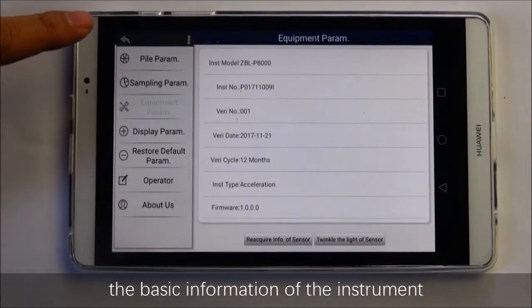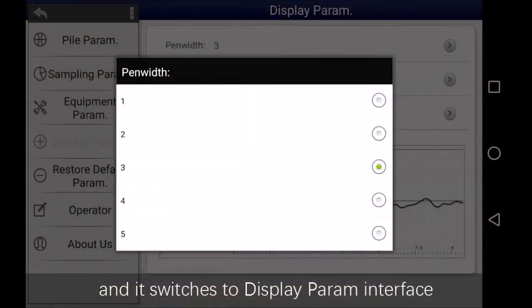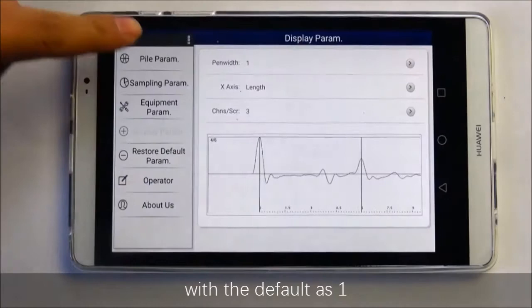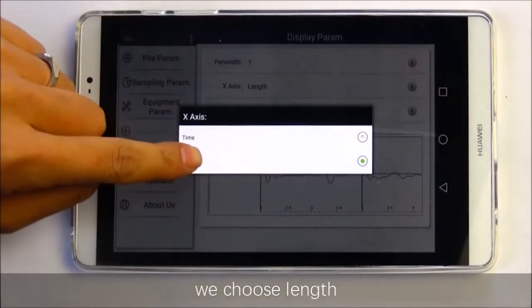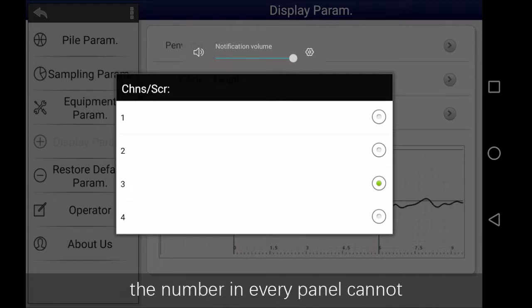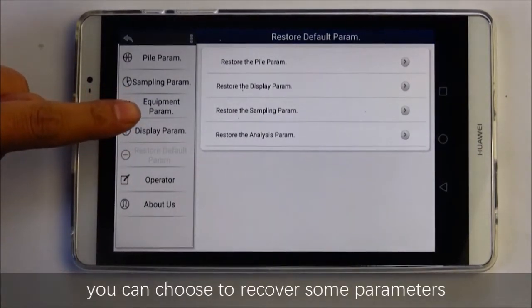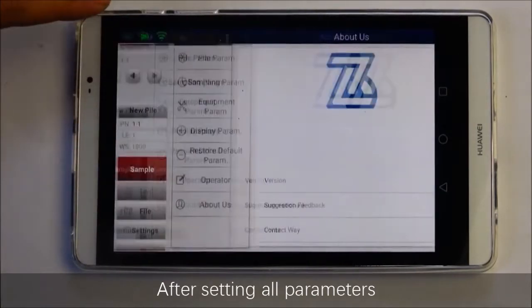Equipment parameter shows the basic information of the instrument. Click display parameter to switch to the display parameter interface. Bandwidth refers to the width of a signal channel waveform. The bigger the bandwidth, the wider the waveform, with the default as one. The axis can be length or time, and generally we choose length. Screen refers to the amount of waveforms displayed in every screen. Options are 1, 2, 3, or 4. You can set the information of the operator from the operator interface.